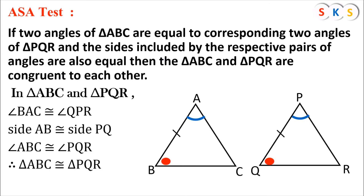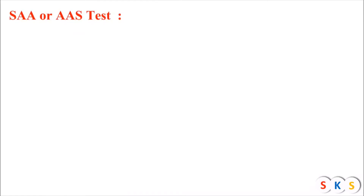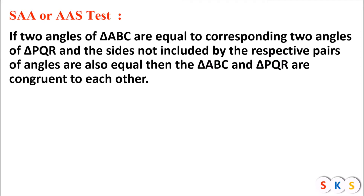You can see in this figure that two angles of both triangles are congruent, as well as the one side between those two equal angles is also congruent. Therefore, triangle ABC and triangle PQR are congruent by the ASA test — that is, the Angle-Side-Angle test. SAA or AAS test: if two angles of triangle ABC are equal to the corresponding two angles of triangle PQR, and the sides not included by the respective pair of angles are also equal, then the triangles are congruent.